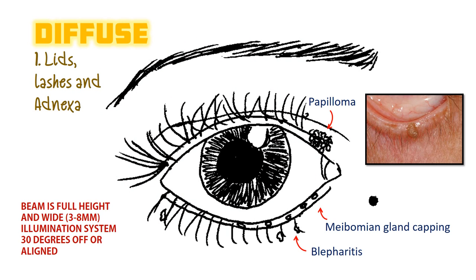Step one: examination begins with the lids, lashes and adnexa. Generally, a diffuse beam is used. This is a beam that's full height and wide, about three to eight millimeters. The illumination system should be 30 degrees off, or can also be aligned. For routine examination, I prefer magnification between 10 to 16x. Diffuse beam allows for an overview of the whole eye. Examine the lids and lashes together, top then bottom. Common pathology to look for is blepharitis, papillomas, any skin tags, or capping of the meibomian glands.